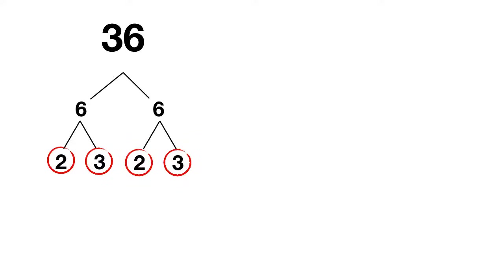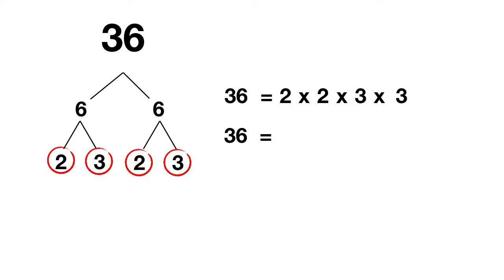So how can we write out the prime factors of 36? We write that 36 is equal to 2 times 2 times 3 times 3, organized from smallest to biggest. Now we want to rewrite them using exponents. So we'll write that 36 is equal to — and we want to write down these two 2's. Well 2 is being multiplied once, twice, so it's 2 to the power of 2.